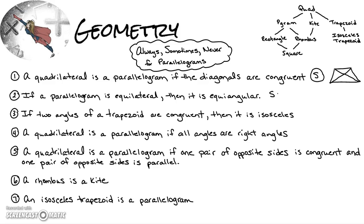Number two: if a parallelogram is equilateral, then it is equiangular. I'd say sometimes, because a rhombus is equilateral but not equiangular — the four sides are congruent but the four angles are definitely not all congruent. However, in a square both the sides and angles are equal, so this is sometimes true.